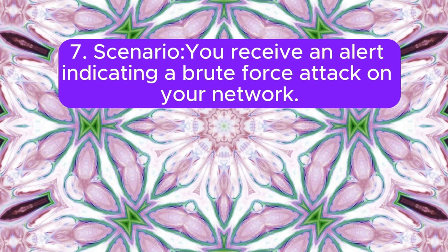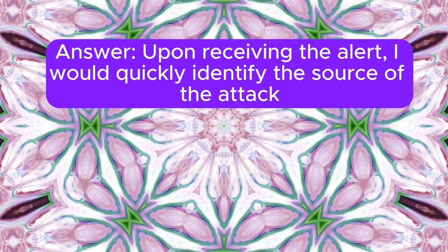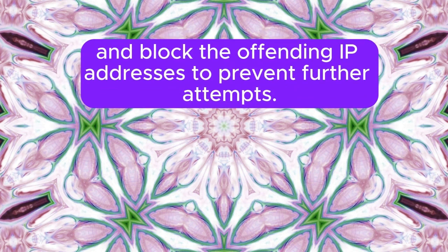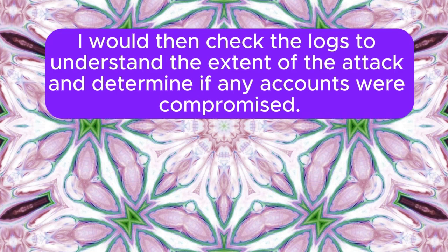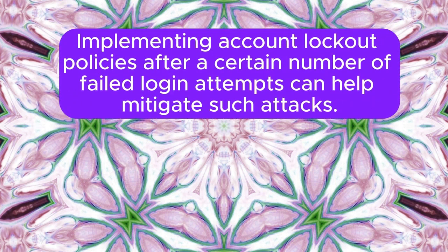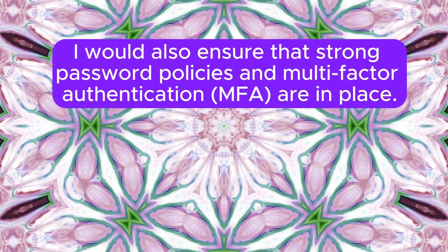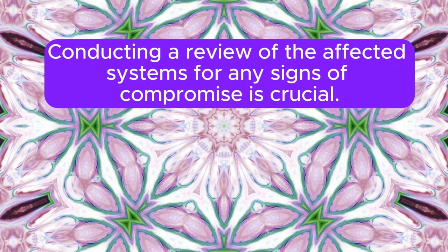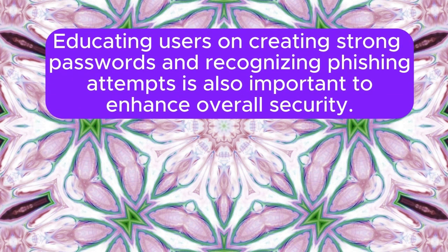Scenario 7: You receive an alert indicating a brute force attack on your network. What is your response? Upon receiving the alert, I would quickly identify the source of the attack and block the offending IP addresses to prevent further attempts. I would then check the logs to understand the extent of the attack and determine if any accounts were compromised. Implementing account lockout policies after a certain number of failed login attempts can help mitigate such attacks. I would also ensure that strong password policies and multi-factor authentication (MFA) are in place. Conducting a review of the affected systems for any signs of compromise is crucial. Educating users on creating strong passwords and recognizing phishing attempts is also important to enhance overall security.